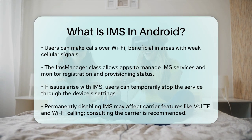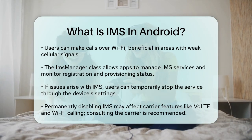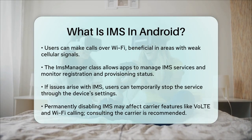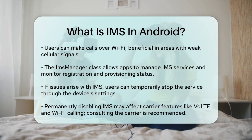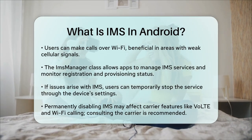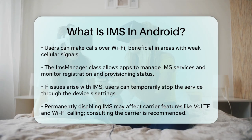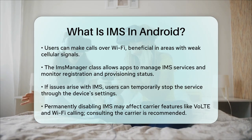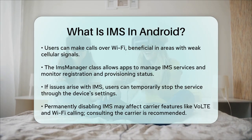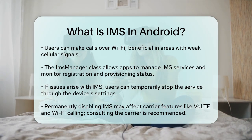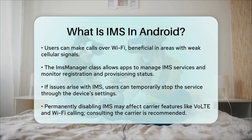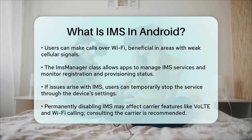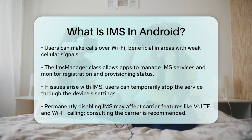If you encounter issues with your IMS service, such as problems with network connectivity or voice calls, you can temporarily halt the service by going to the Settings menu, navigating to Apps, finding the IMS service, and tapping Force Stop. However, disabling the IMS service permanently may impact carrier-specific features like VoLTE and Wi-Fi calling, so it's best to consult your carrier before doing so.